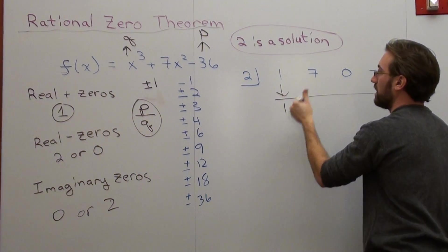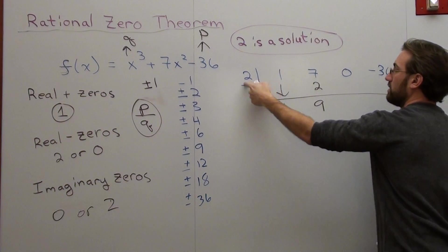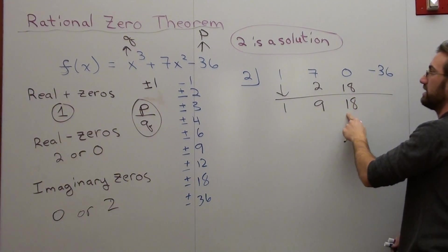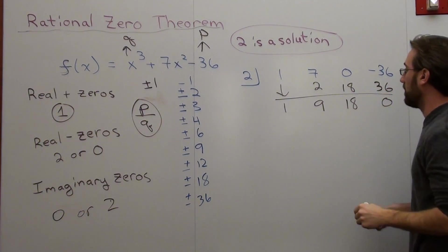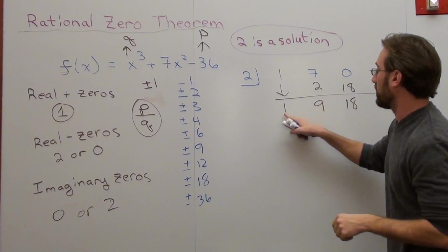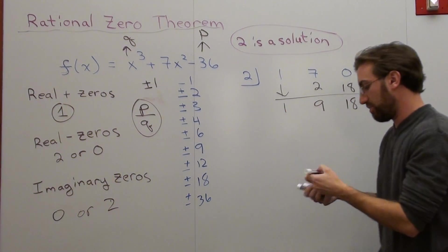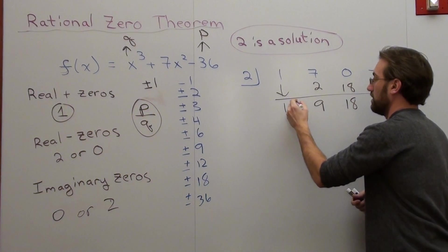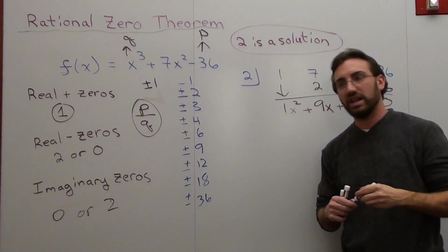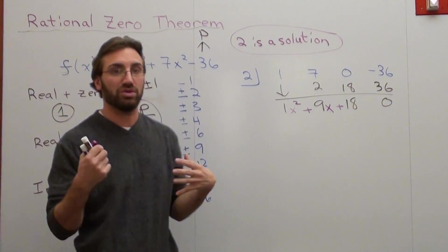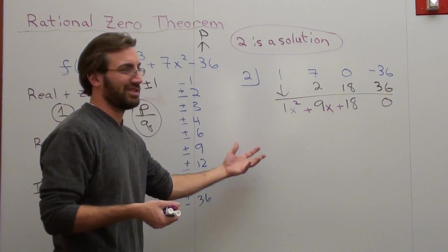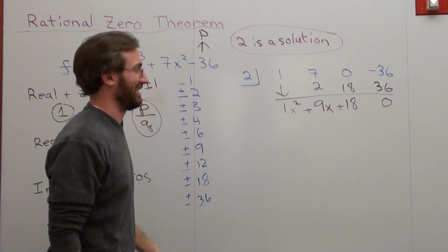So let's use synthetic division. One. Two times one is two. That's nine. Two times nine is 18. Two times 18 is 36. Bam! We really did work on this. It's very good now.